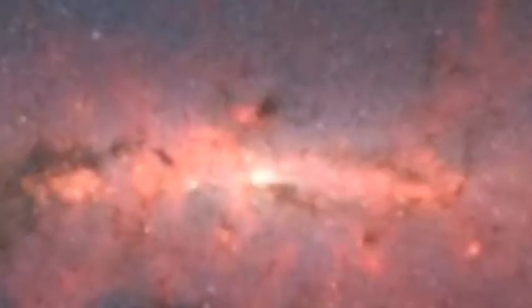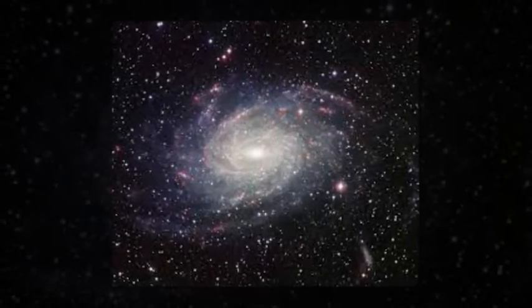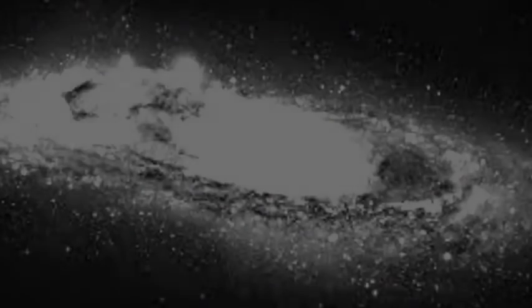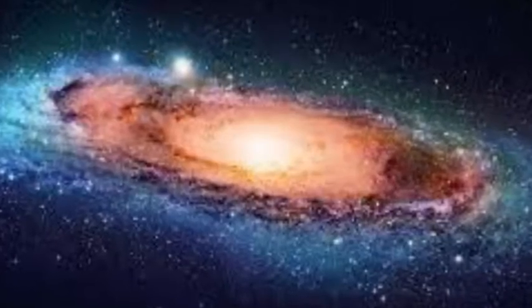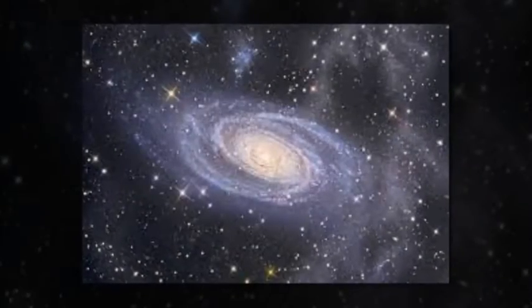Now, for the first time, these winds have been seen in a more normal kind of active galaxy known as a Seyfert, which does not appear to have undergone any merging. When observed in visible light, almost all Seyfert galaxies have a spiral shape similar to our own Milky Way.